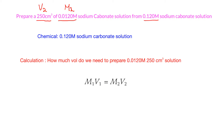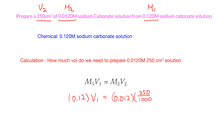So therefore that will be M2, and the original molarity will be M1. We can just put this data into the equation. You will find that 0.12 times V1 equals 0.012 times V2. Remember it should be in dm³, so you convert cm³ into dm³. You will find that V1 is 0.025 dm³, which is equal to 25 cm³.